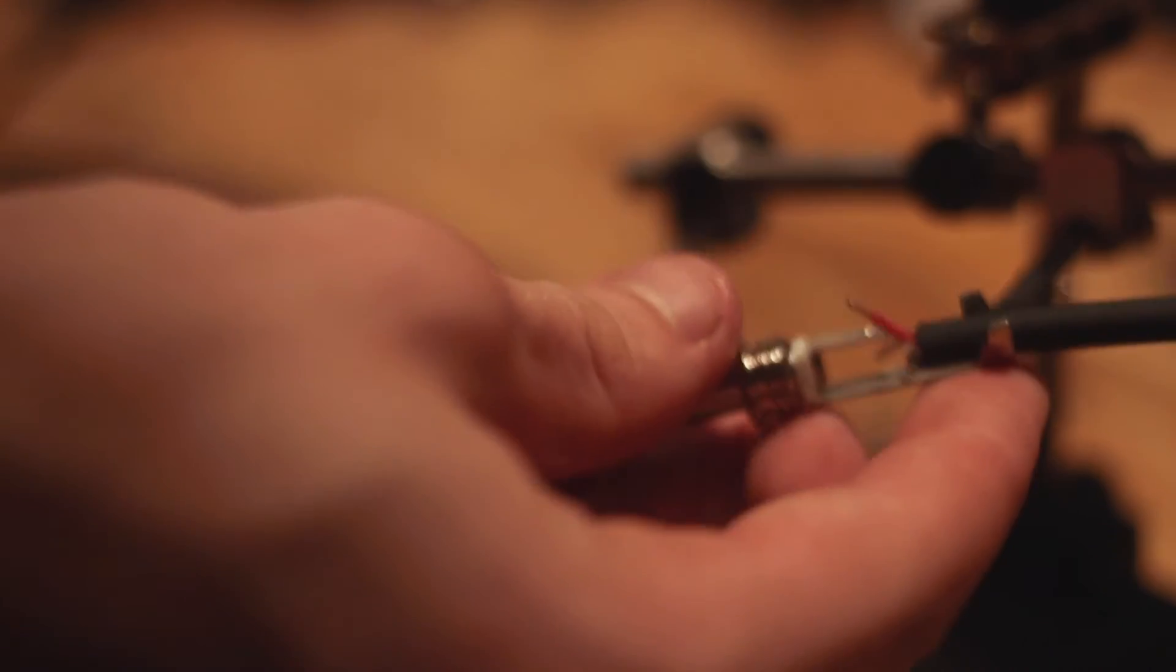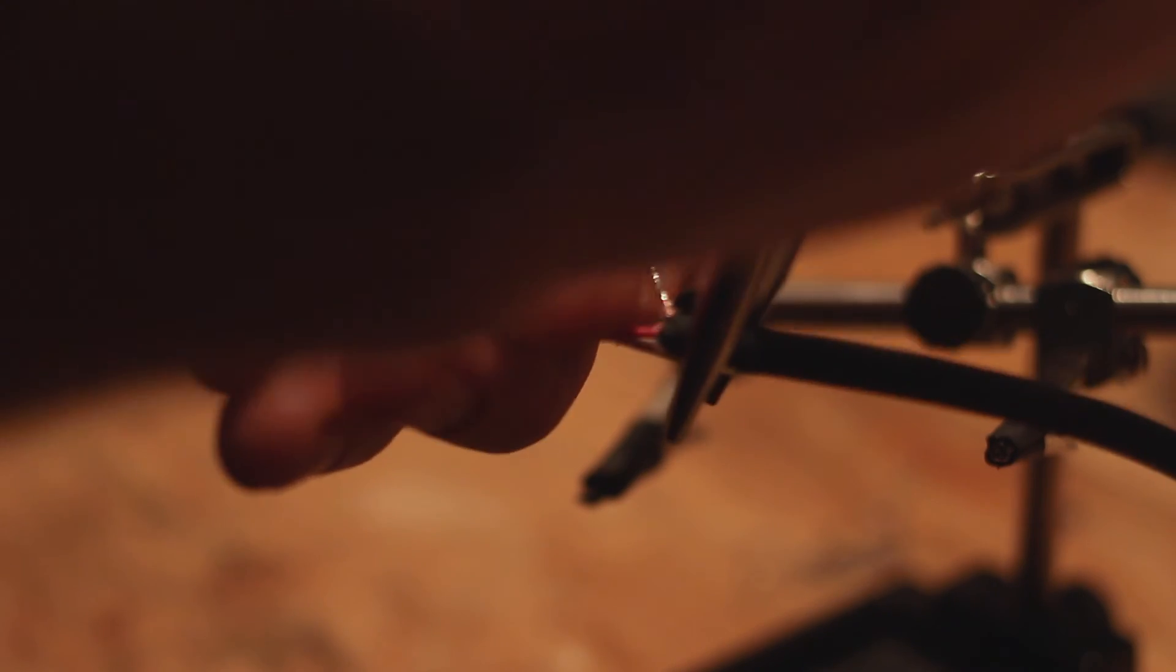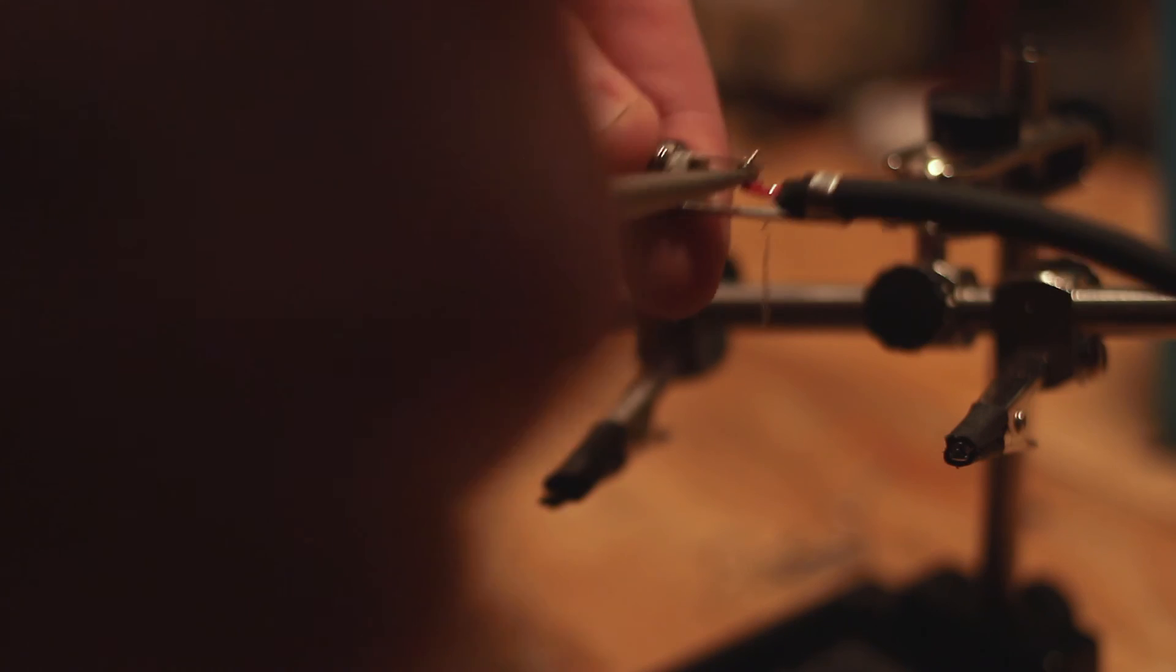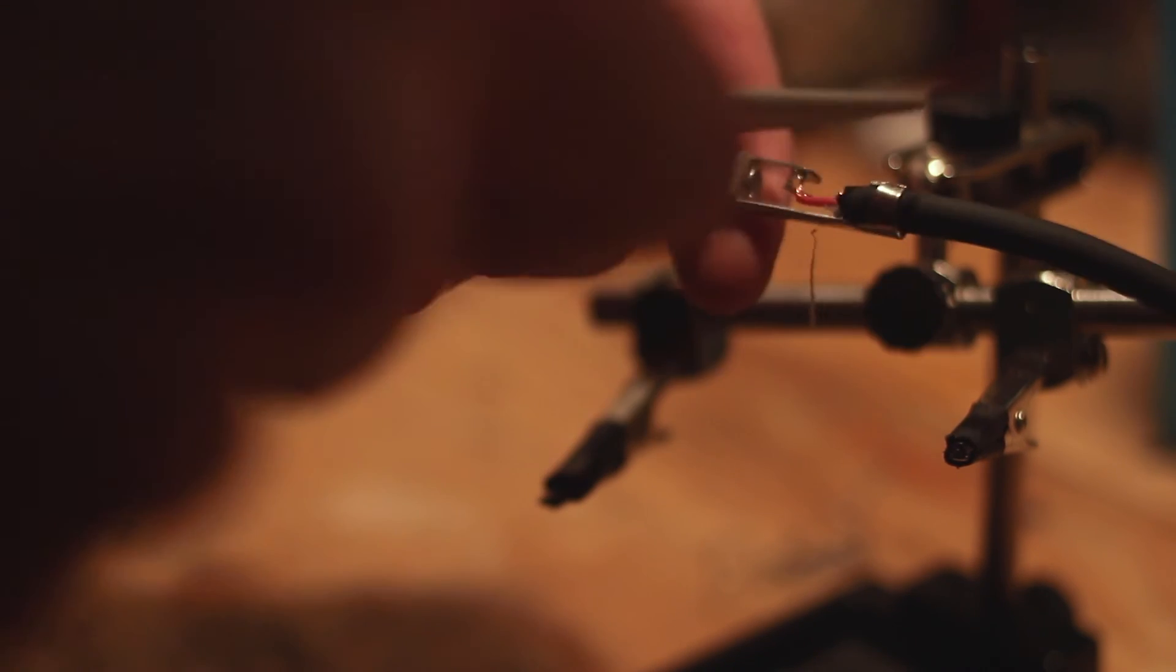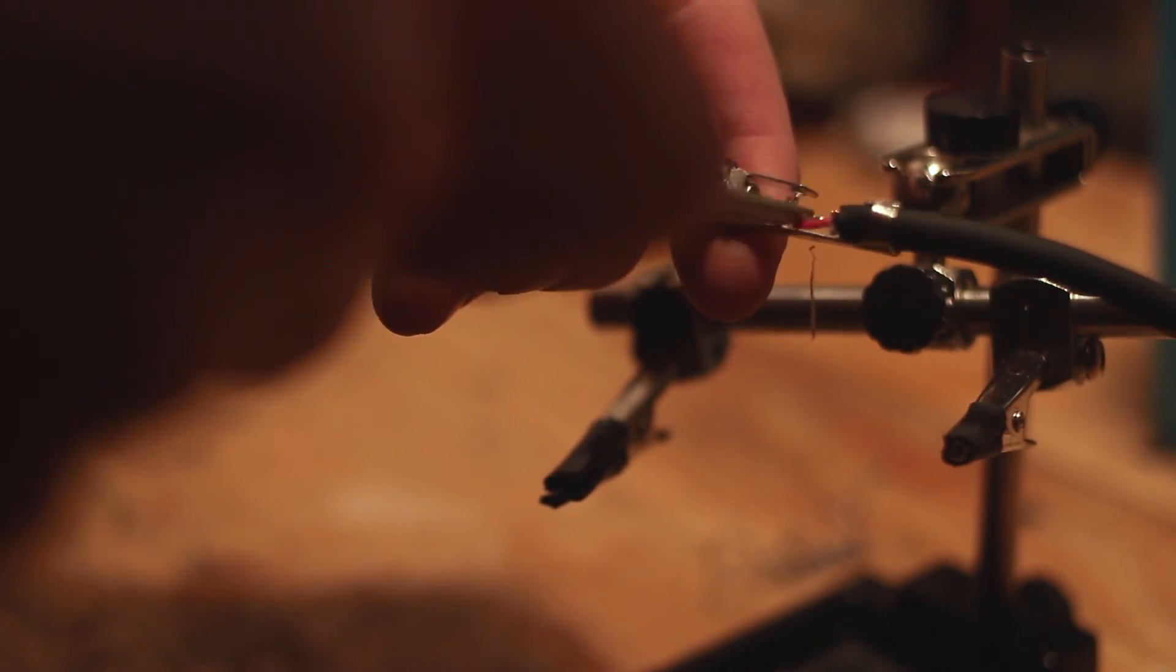Next thing you want to do is unscrew the plugs housing and slide the housings onto the cable. Place the wires into the plugs in their correct orientation. The conductors will go onto the tip terminal while the ground will go onto the ground terminal.